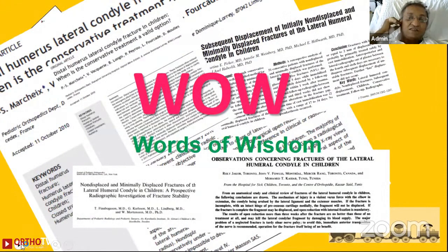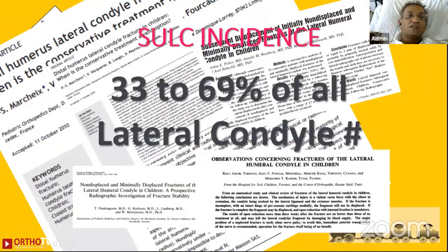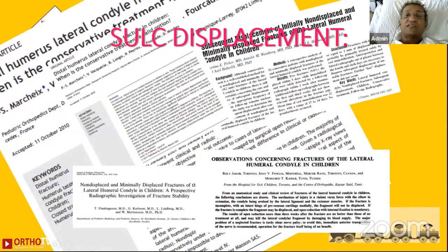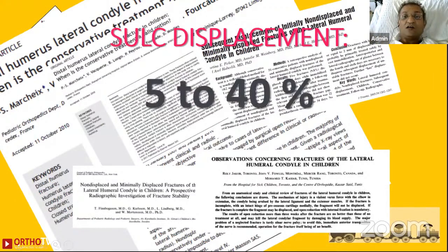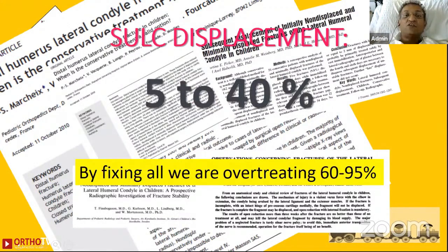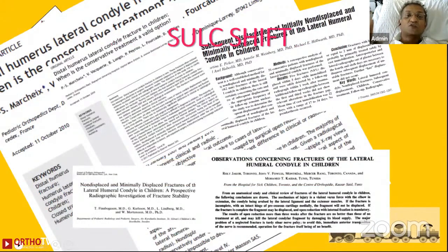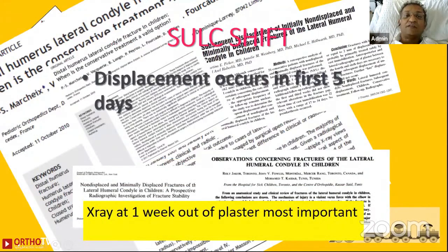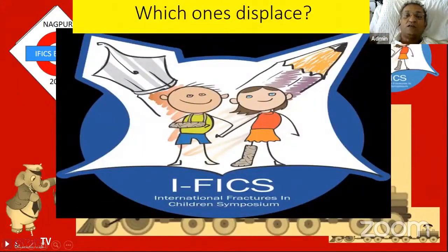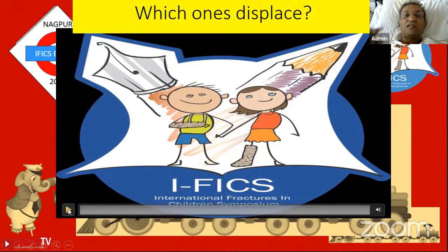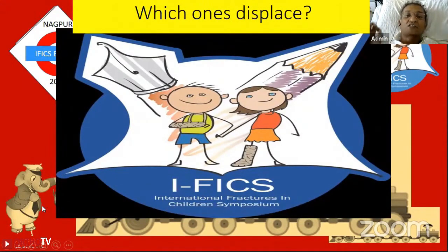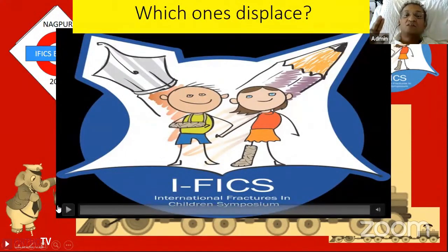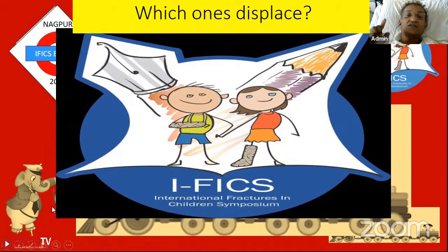Almost half of fractures can displace, but that doesn't mean you have to fix all undisplaced fractures — by fixing all you are overtreating 60 to 95 percent of cases. Fractures that are going to shift will do so in the first five days or within a week. If the X-ray at one week shows no displacement, it's not going to displace further. Almost 50 to 95 percent can be treated conservatively without MRI or subjecting the child to anesthesia.